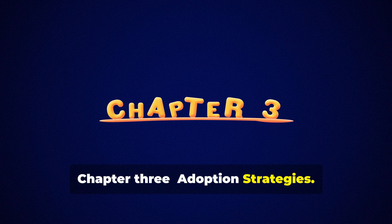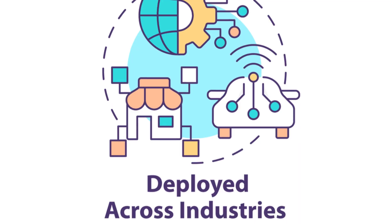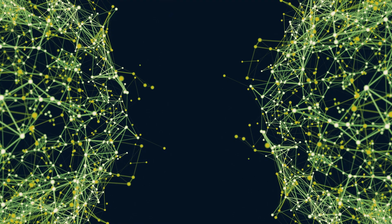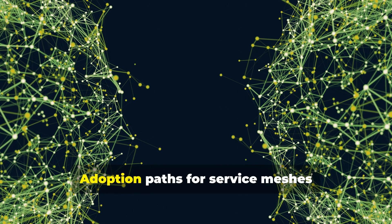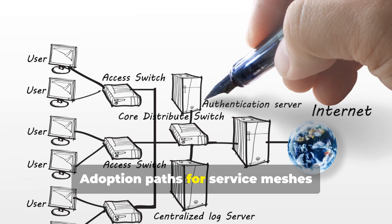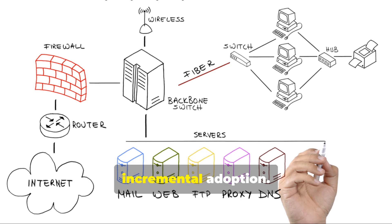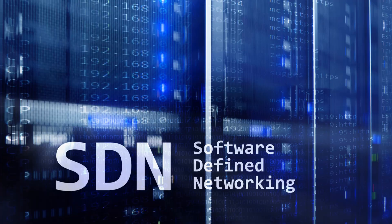Chapter 3: Adoption Strategies. Adoption paths for service meshes include greenfield deployment and incremental adoption.